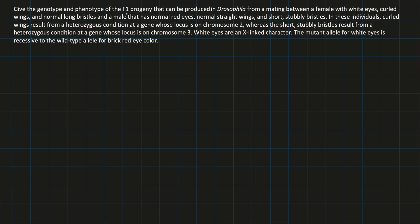The problem says: give the genotype and phenotype of the F1 progeny — that's the first progeny of the cross between two parents — that can be produced in Drosophila. Our first trait is white eyes, our second trait is curled wings, and our third trait is bristles (normal long bristles). Those are the three traits we need to keep track of.